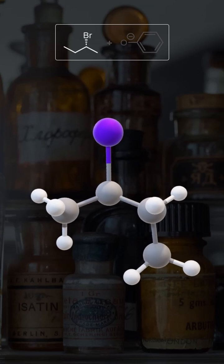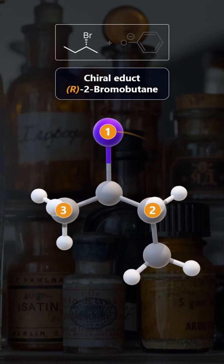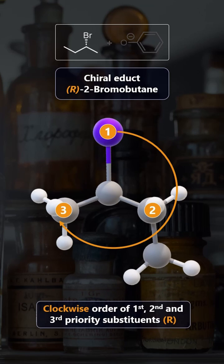2-bromobutane is chiral as one of the carbons has four different substituents. We are looking at the R-enantiomer here. This will be important for the stereospecificity of the reaction.